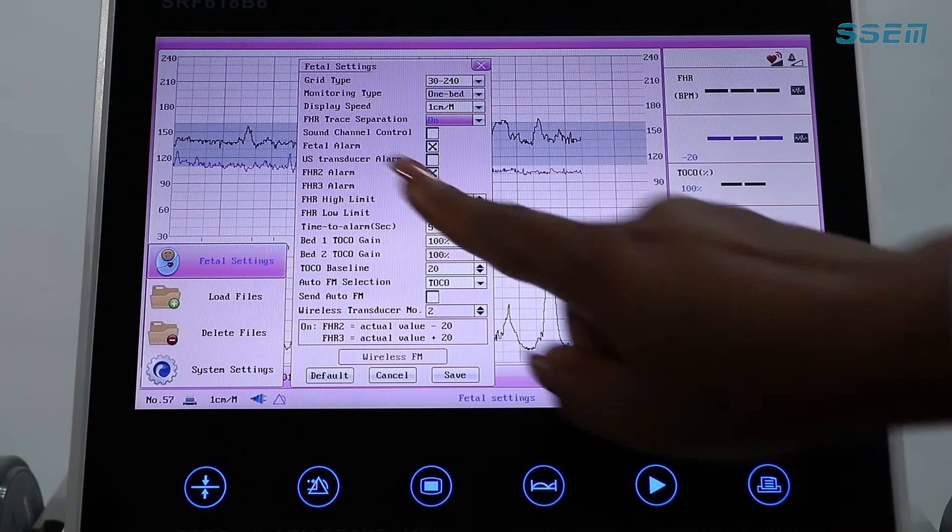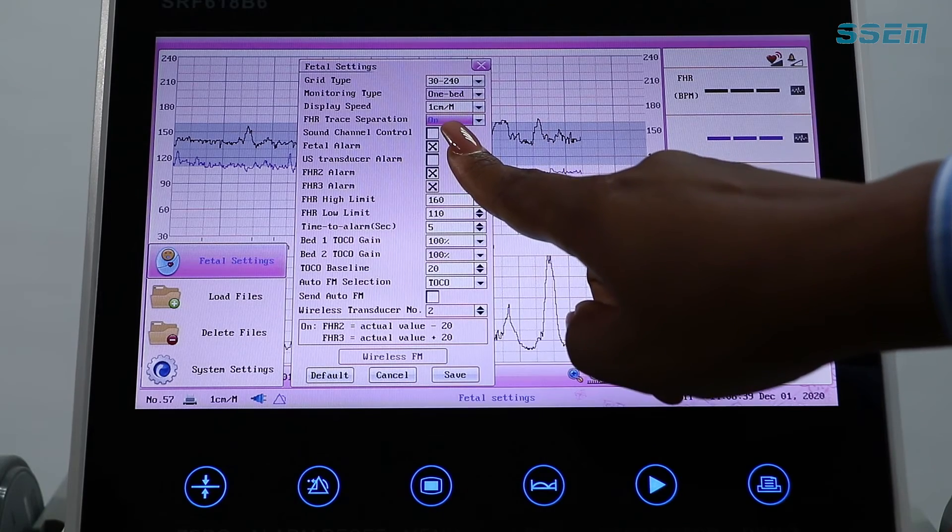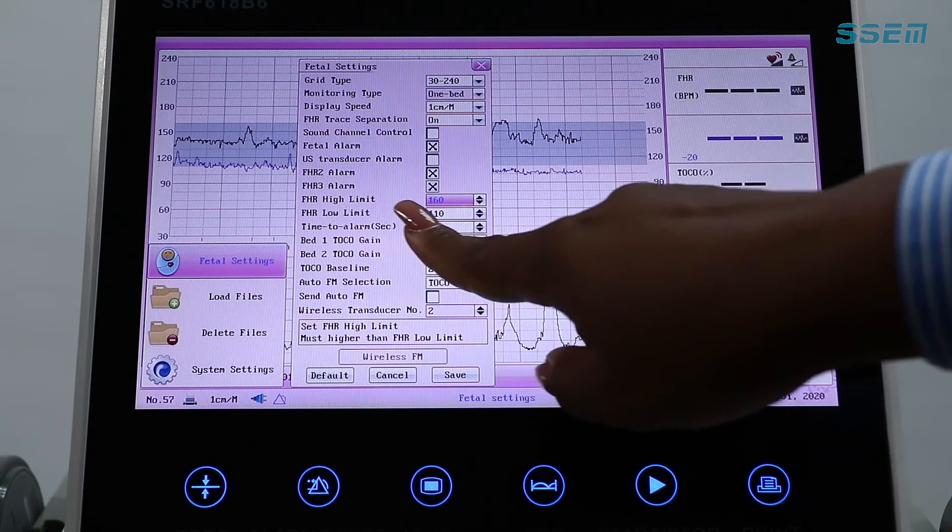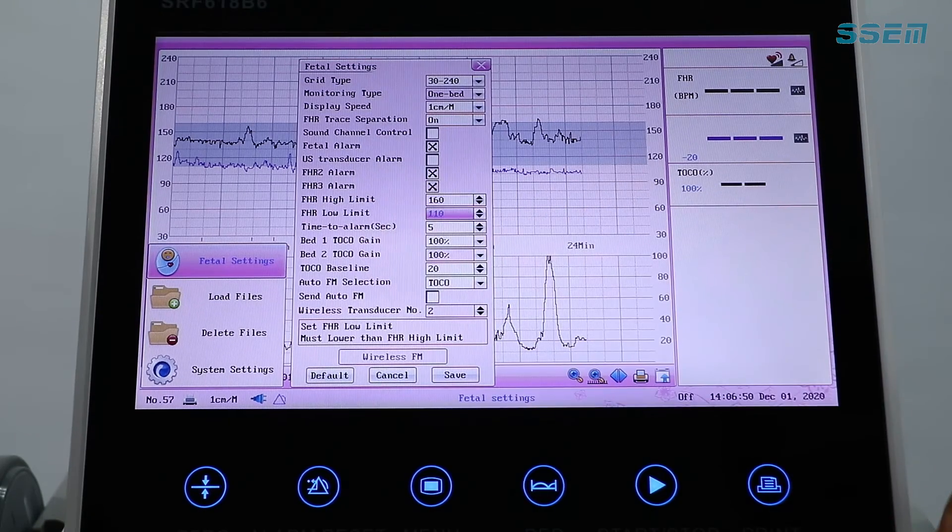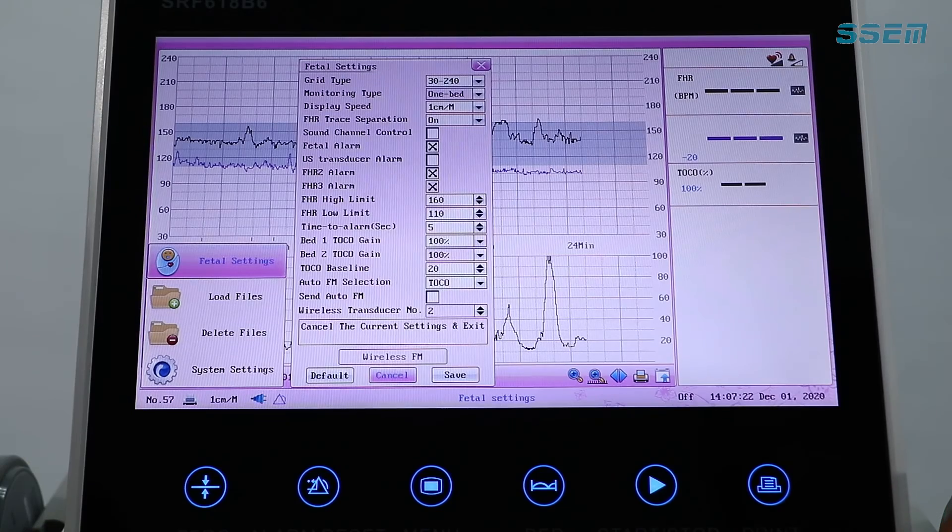Make sure that your fetal separation is on so your FHRs do not overlap. Set your FHR high limits and set your FHR low limits. And then you press save.